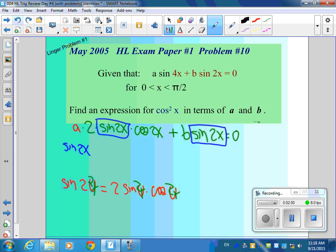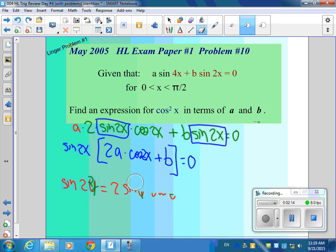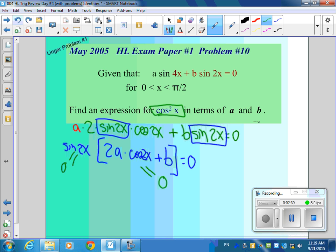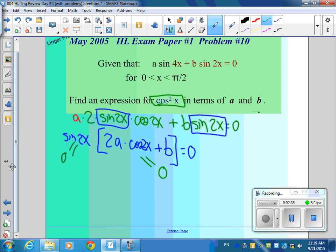Because if you factor it out, and this is a big move, I'll get sine 2x times bracket 2a cosine 2x plus b equals 0. The reason that's such a nice thing is we have two possibilities. Either sine 2x equals 0, or this bracket thing equals 0, and that bracket thing looks more like what I'm looking for to solve for cosine squared x.